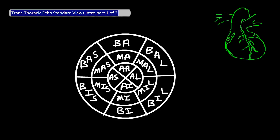Just to quickly orient you, the six basal parts are here, the six mid-level parts are here, and the four apical parts are here.